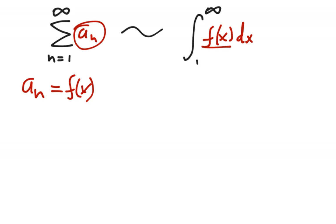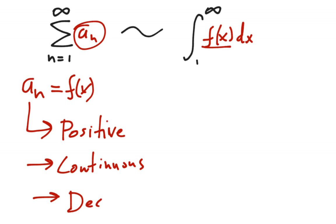Now, the integral test only works if a sub n satisfies the following conditions. The terms must all be positive, so this does not work for alternating series. They must be continuous, which is pretty easy to do. Most of these functions are continuous, they probably won't trick you with that. And they all have to be decreasing. So do a quick check. If it's not alternating, just make sure all the terms are positive. Most of them will be continuous, so we won't have to worry about that.